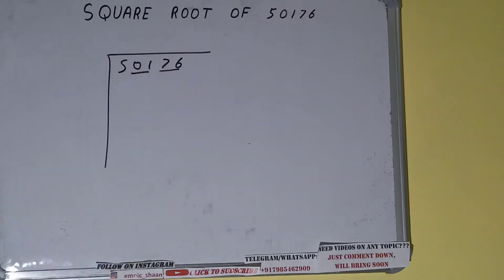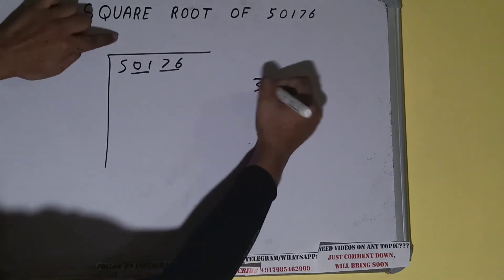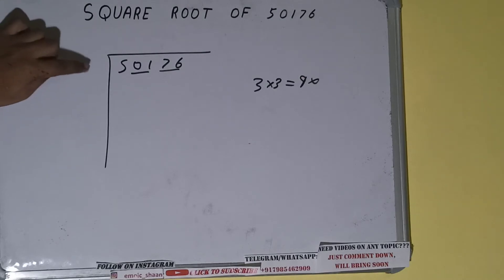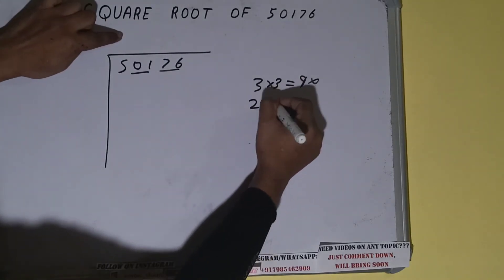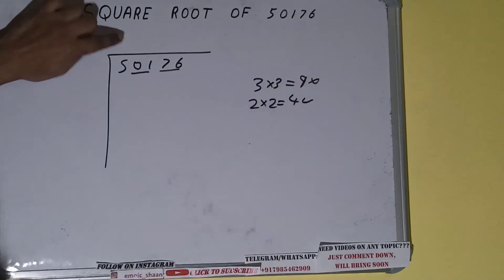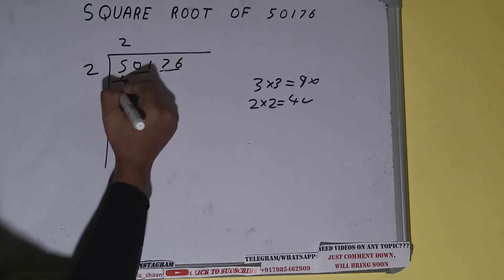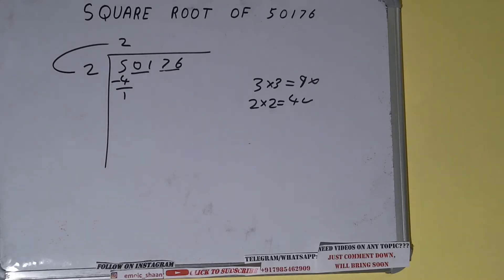The rule is whatever number we write here, we have to write here also. If we write 3 here and 3 here, we'll be getting 9, which is greater than 5, so we cannot take it. If we write 2 here and 2 here, we'll be getting 4, which is good to take. So 2 here and 2 here, 4 subtract, and 1 will be left. We did 2×2, so add both: 2+2=4.